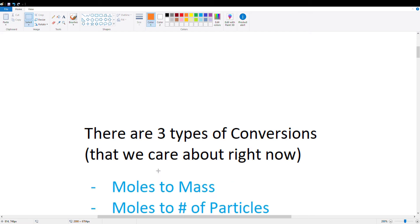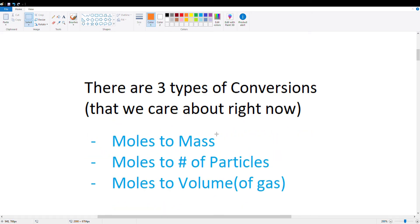So we're going to start by looking at three types of conversions. These are the main conversions that you'll probably see in chemistry. These are moles to mass, moles to number of particles in the molecule, and moles to volume. And that's assuming the subject that we're looking at is a gas.